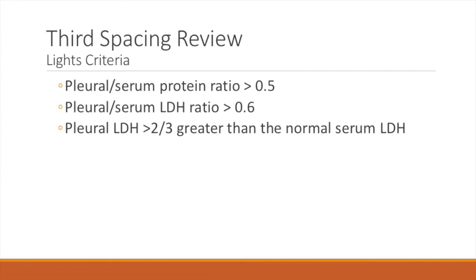Moving on, we're going to talk about Light's criteria. The whole purpose of it is to differentiate between transudates and exudates. If one of the three criteria are met, then it's an exudate. What you want to do is perform a thoracentesis, send the fluid to the lab, and see what happens. You'll end up looking at the proteins in the fluid — the pleural protein to serum protein ratio. If it's over 0.5, that fulfills one of the criteria and it's an exudate, because basically there's a lot of protein in that fluid.